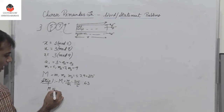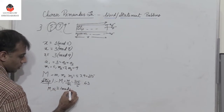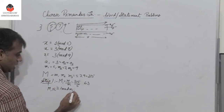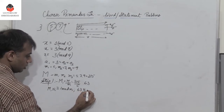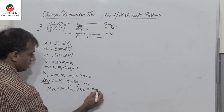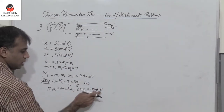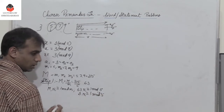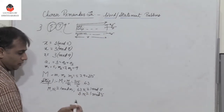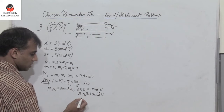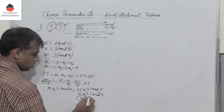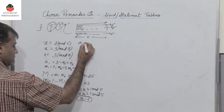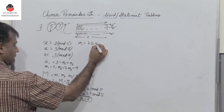Now we need the modular inverse N1 such that M̄1 × N1 ≡ 1 (mod M1), i.e., 63 × N1 ≡ 1 (mod 5). Since 63 mod 5 = 3, we need 3 × N1 ≡ 1 (mod 5). We know 3 × 2 = 6 and 6 mod 5 = 1, so N1 = 2. Therefore M̄1 = 63 and N1 = 2.